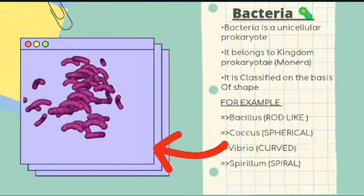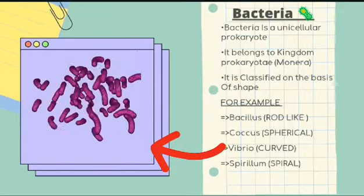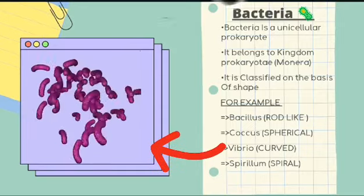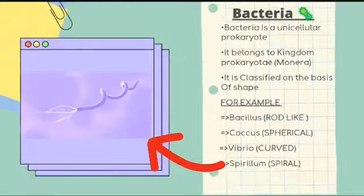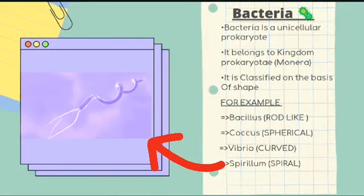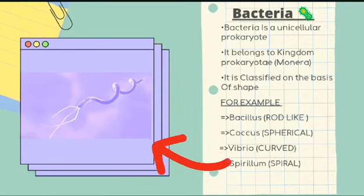Another type of bacteria classified on the basis of its shape is vibrio. Vibrio is curved in shape, or you can say it is comma-shaped. The fourth one is spirillum, which is spiral in shape — just like a spring. As you can clearly see here in this picture, it is spiral in shape.